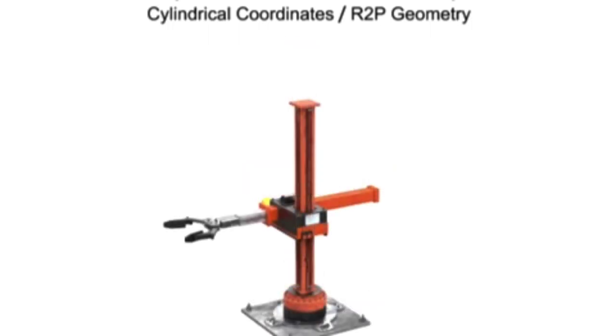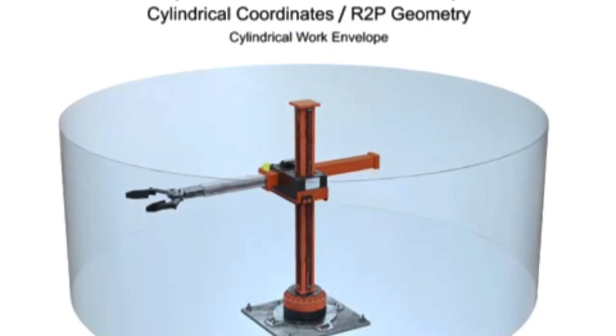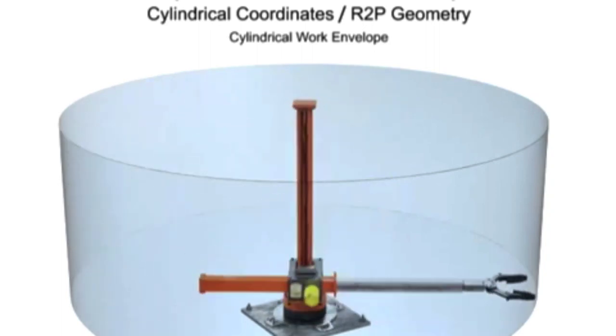Cylindrical geometry robots have a cylindrical work envelope. The advantages of this type of work envelope is a robotic arm reach that is deep at both the top and bottom of the stroke.